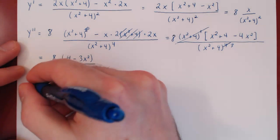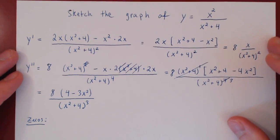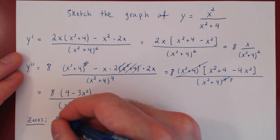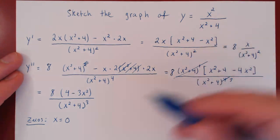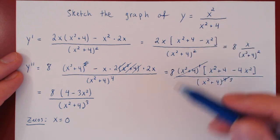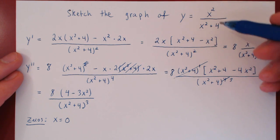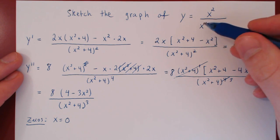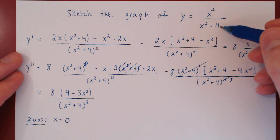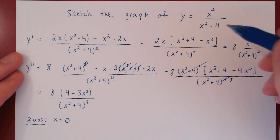Let's look for possible zeros of our function. Since we have a rational function, the fraction can only be zero if the numerator is zero — therefore, if x equals zero. At the same time, we've found our y-intercept: when x is zero, y is zero. Every time you have a rational function, you have to be wary of possible vertical asymptotes, which means a division by zero. But here x squared plus 4 is always greater than or equal to 4, so we will never have division by zero. This function has no vertical asymptotes.